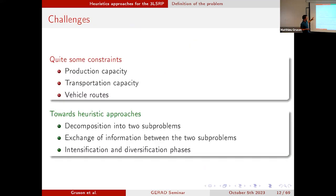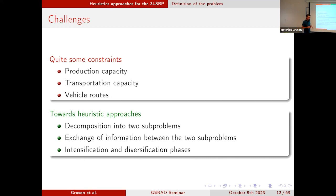In the problem, as I was mentioning, we have quite some constraints: the production capacity constraint at the plant, the transportation constraints, and the vehicle routes. All of that makes the problem quite challenging. We decided not to go to an exact method and instead designed two heuristic approaches: a top-down approach and a bottom-up approach. In both heuristics, the general idea is to decompose the main problem into two sub-problems that exchange information, and then perform iterations to improve the solution — both intensification and diversification phases.